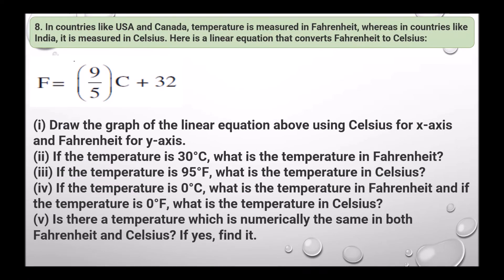Next question: in countries like USA and Canada temperature is measured in Fahrenheit, whereas in India it is measured in Celsius. The linear equation converting Fahrenheit to Celsius is F equals 9 upon 5 times C plus 32. Draw the graph using Celsius for the x-axis and Fahrenheit for the y-axis. We need to answer: temperature in Fahrenheit when C is 30; temperature in Celsius when F is 95; temperature in Fahrenheit when C is 0; temperature in Celsius when F is 0; and whether there is a temperature numerically the same in both scales.